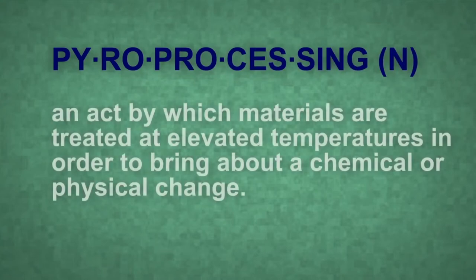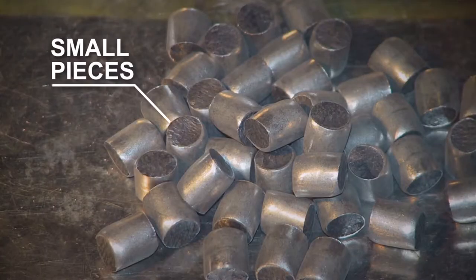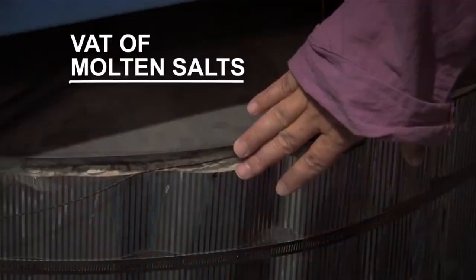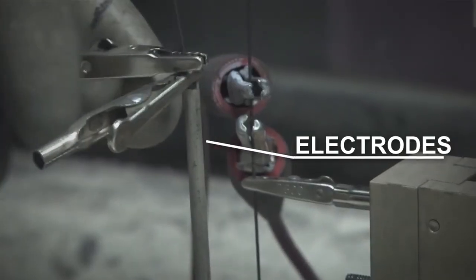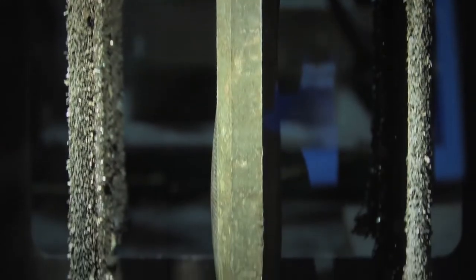The rods generate energy by transforming some uranium into different elements, and fission products start to build up. We need chemistry to separate them. Since fission products are thoroughly mixed with the uranium, pyroprocessing — a technology invented by Argonne scientists — is used. They call it pyroprocessing, but it's really a molten salt process: dissolving the fuel rods in molten salt and doing electrochemistry on it. After chopping fuel rods into small pieces and submerging them in a vat of molten salts, running an electric current causes the uranium and transuranics to separate out and form crystals on the electrodes. Molten salt can not only be a fuel, but a way to reprocess nuclear fuels and clean them up for reuse.